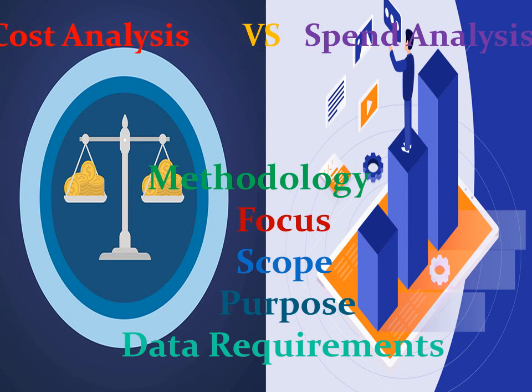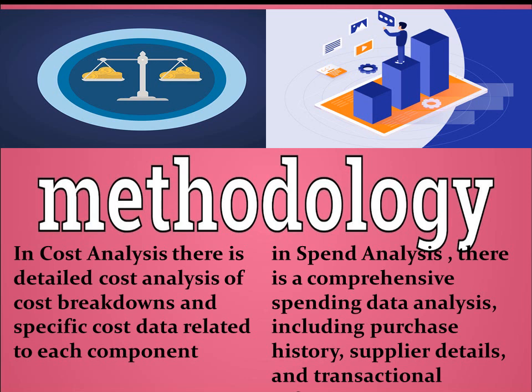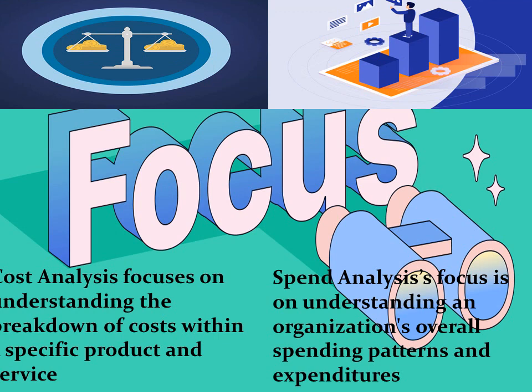After defining procurement analysis, cost analysis, and spend analysis, let's see how cost analysis is different from spend analysis. There are four or five dimensions on which we can differentiate them: methodology, focus, scope, purpose, and data requirements. The first difference is methodology — the way they work. In cost analysis, there is a detailed breakdown of specific cost data related to each component, whereas in spend analysis there is a comprehensive spending data analysis which includes purchasing history, supplier details, and transactional information.